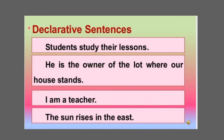Some more examples of declarative sentences: 'Students study their lessons.' 'He is the owner of the lot where our house stands.' 'I am a teacher.' 'The sun rises in the east.'